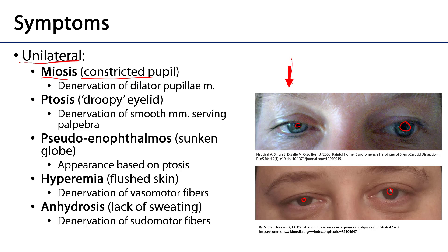The other symptom is ptosis — a droopy eyelid. Controlling the superior eyelid is a muscle called levator palpebrae superioris, and a tiny slip of that muscle is smooth muscle embedded within the tarsal plate. When sympathetically activated it really opens the eyes wide, but there is generally some sympathetic tone to it. When that muscle is denervated, the eyelid droops.